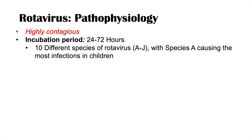There are actually 10 different species of rotavirus, entitled species A through J, with species A being the most common cause of infections in children. So what does rotavirus do specifically to cause its symptoms?